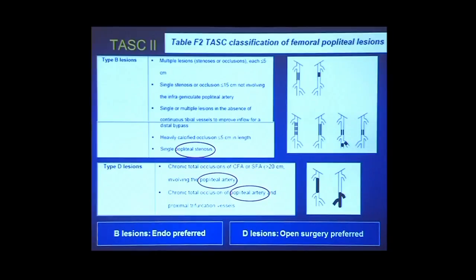What does TASC say about the popliteal artery? The popliteal is mentioned under Type B lesions as a single popliteal stenosis, and under Type D lesions as a chronic occlusion of the SFA involving the popliteal, or an occlusion of the popliteal artery and proximal trifurcation. So an occlusion of the popliteal is by definition a TASC D lesion.